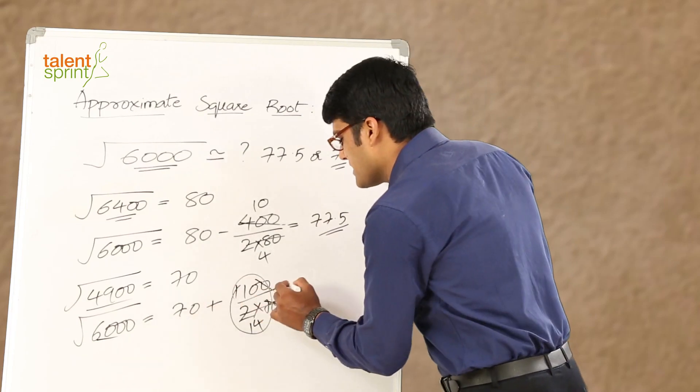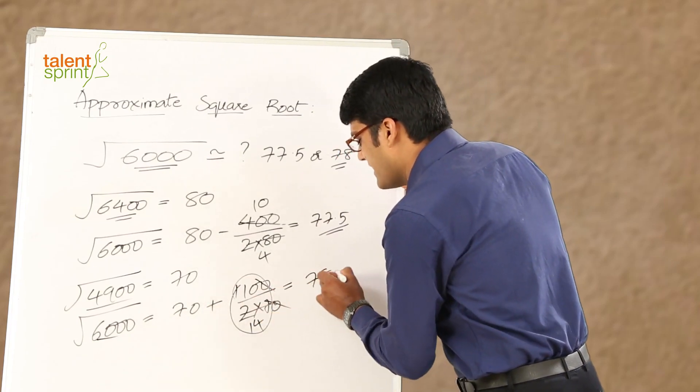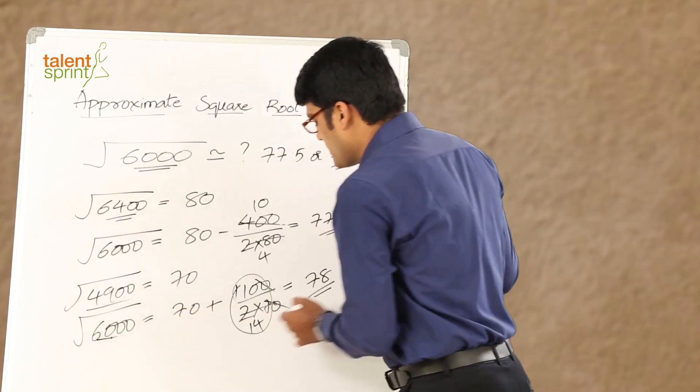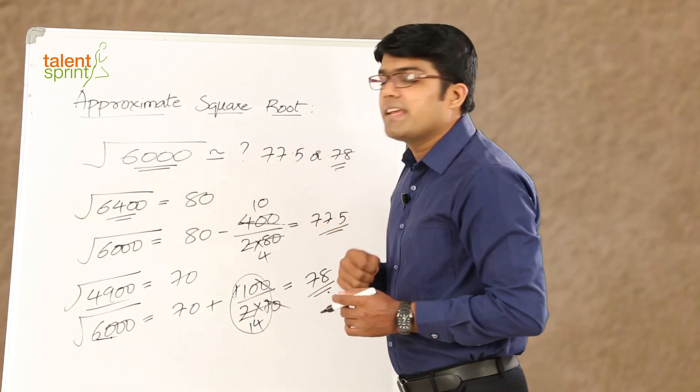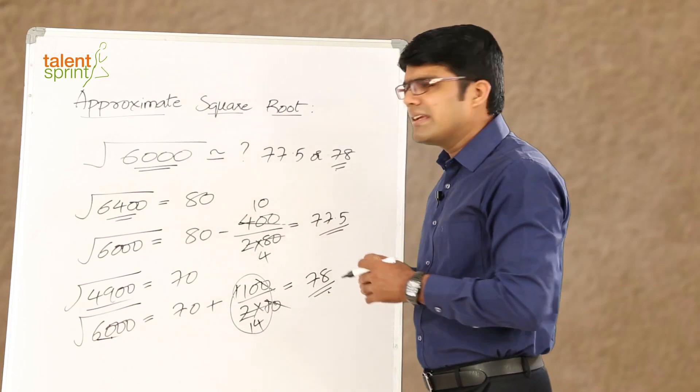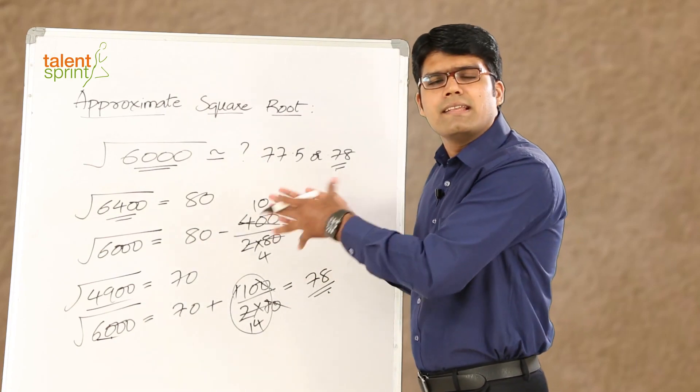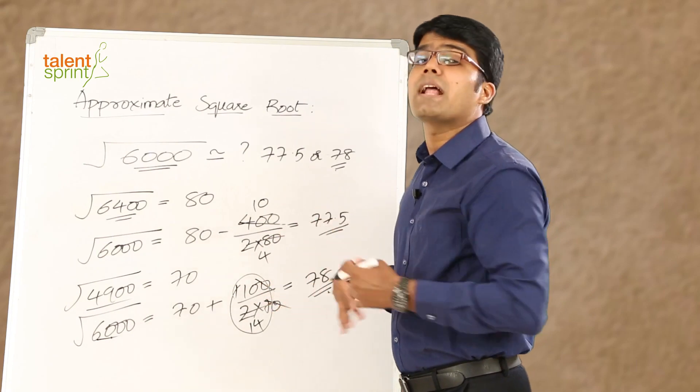So, here 70 plus approximately 8 is 78. So, we see that square root of 6,000 is 78 like what we have got in the earlier case. So, this is how we can calculate approximate square roots by considering a value that is either less than the given number or more than the given number and a perfect square.